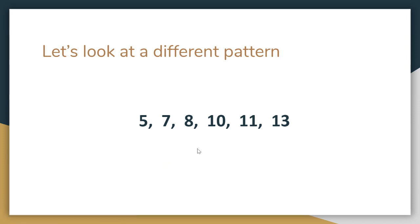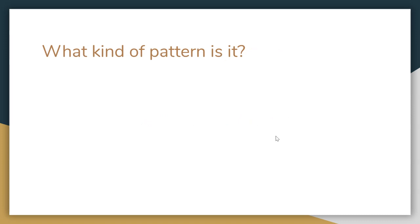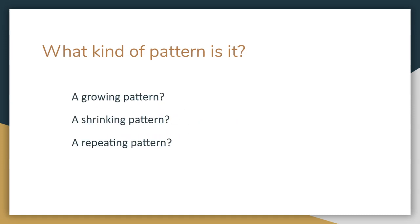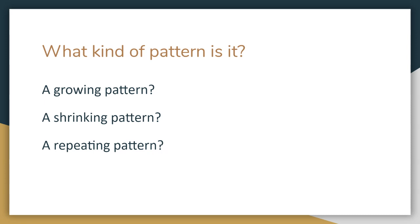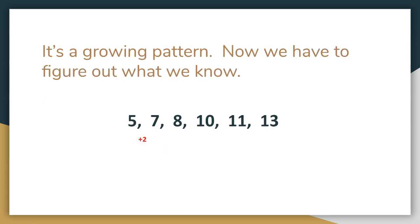5, 7, 8, 10, 11, 13. What kind of pattern is this? Is it a growing pattern, a shrinking pattern, or a repeating pattern? Looking at the numbers, you're going to notice the numbers are always going up. So right away we know it's a growing pattern, and now we have to figure out what we already know in order to create the pattern and continue it.